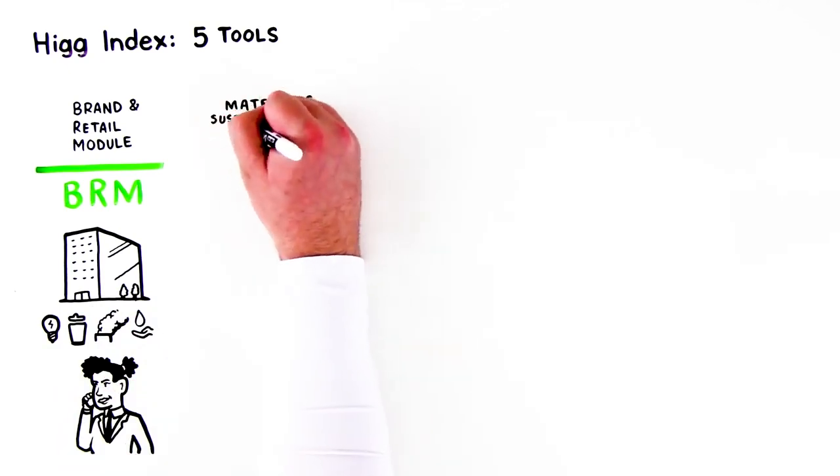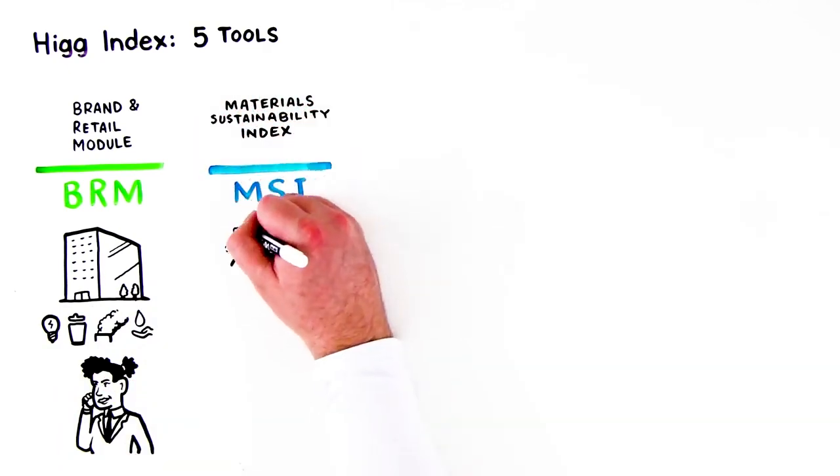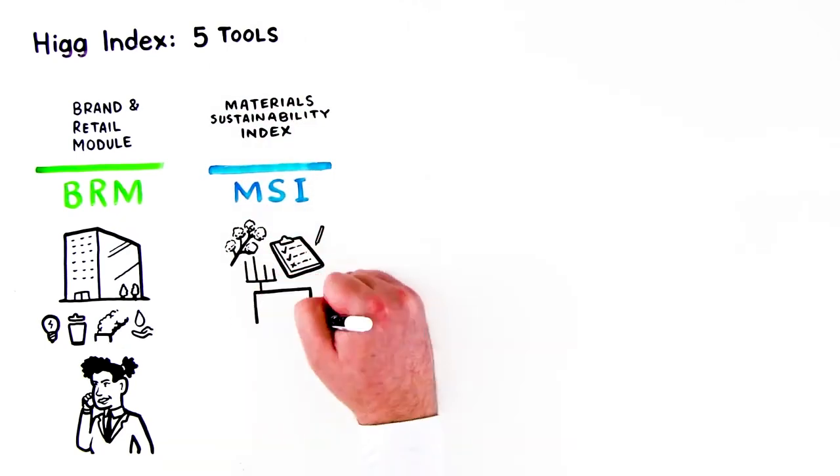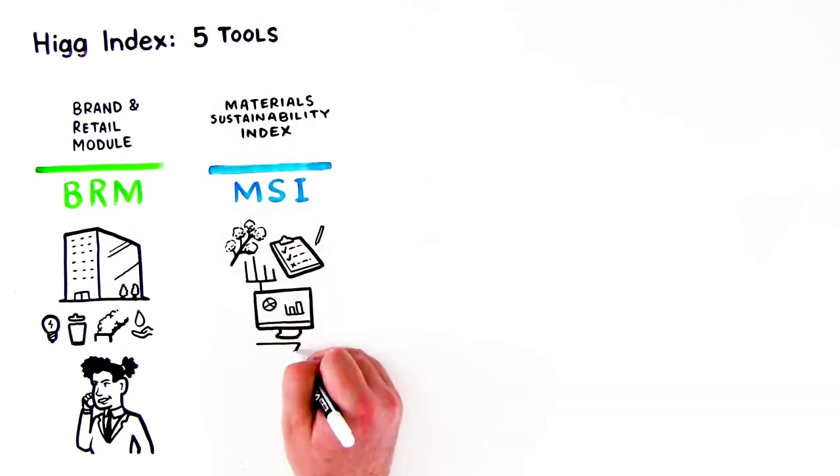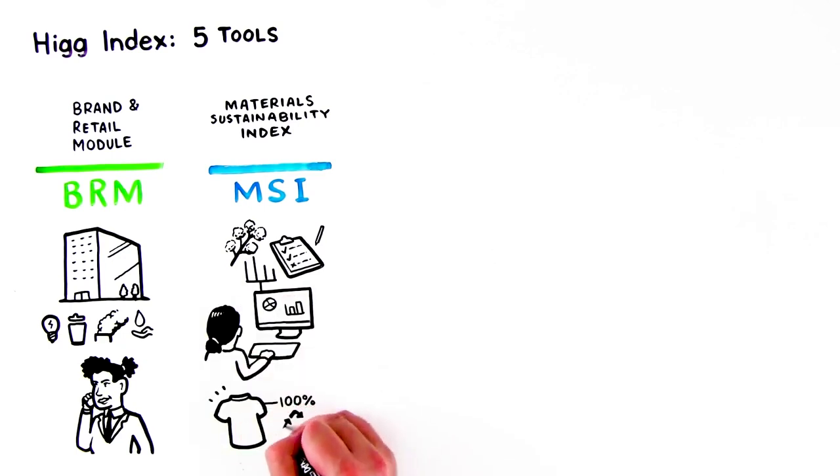The HIG Materials Sustainability Index, or MSI, measures and scores the environmental impacts of materials, helping product designers understand the environmental impact of their material selection decisions and create products that are better for the environment.